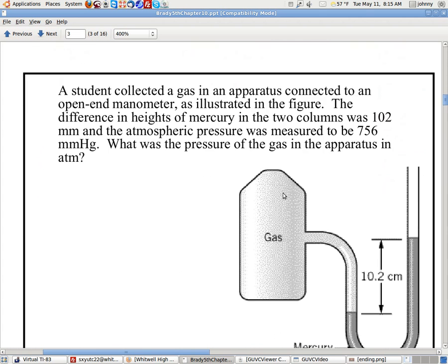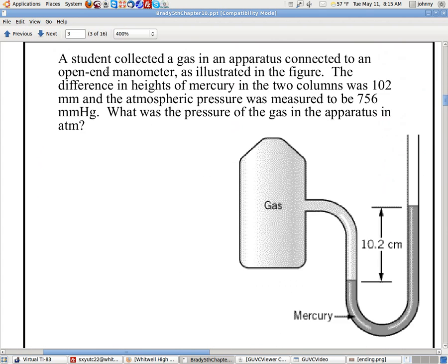Let's look at our first problem. A student collected a gas in an apparatus connected to an open-ended manometer as illustrated in the figure. The difference in the heights of mercury in the two columns was 102 millimeters. The atmospheric pressure was 756 millimeters of mercury. What was the pressure of the gas in the apparatus?